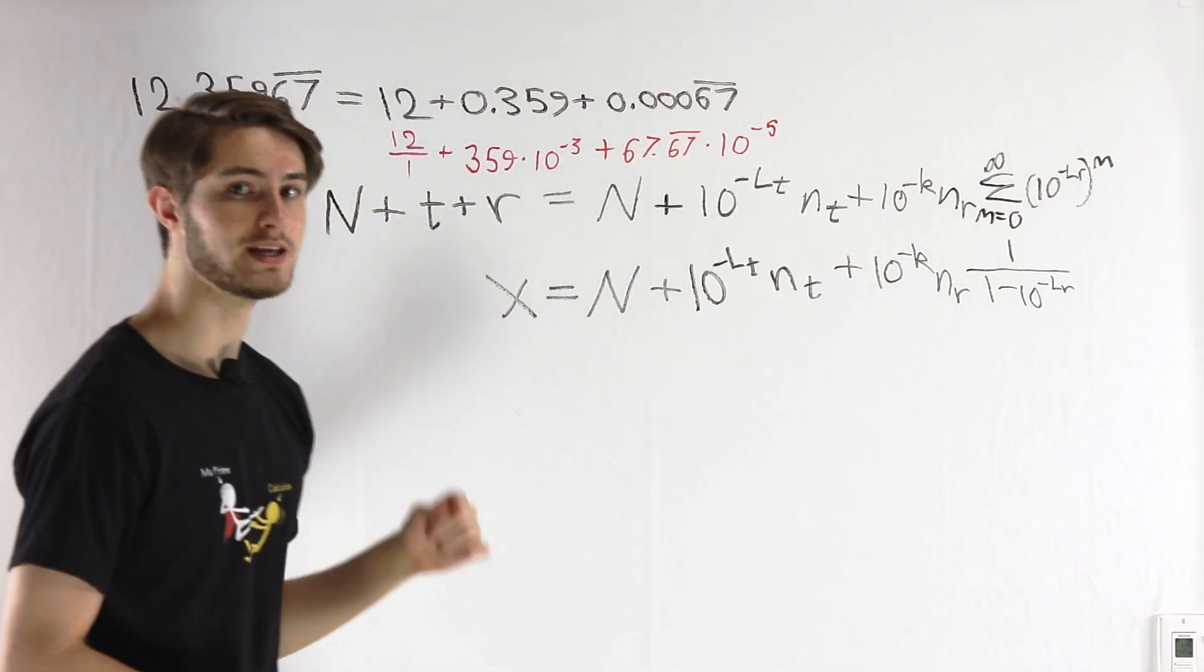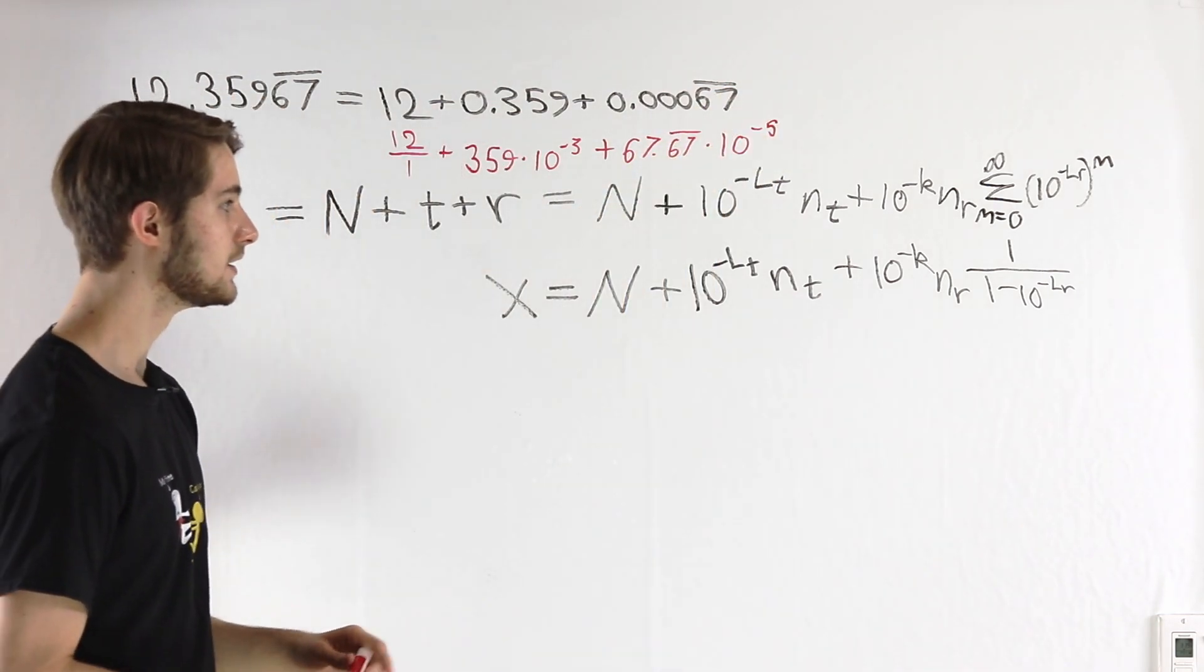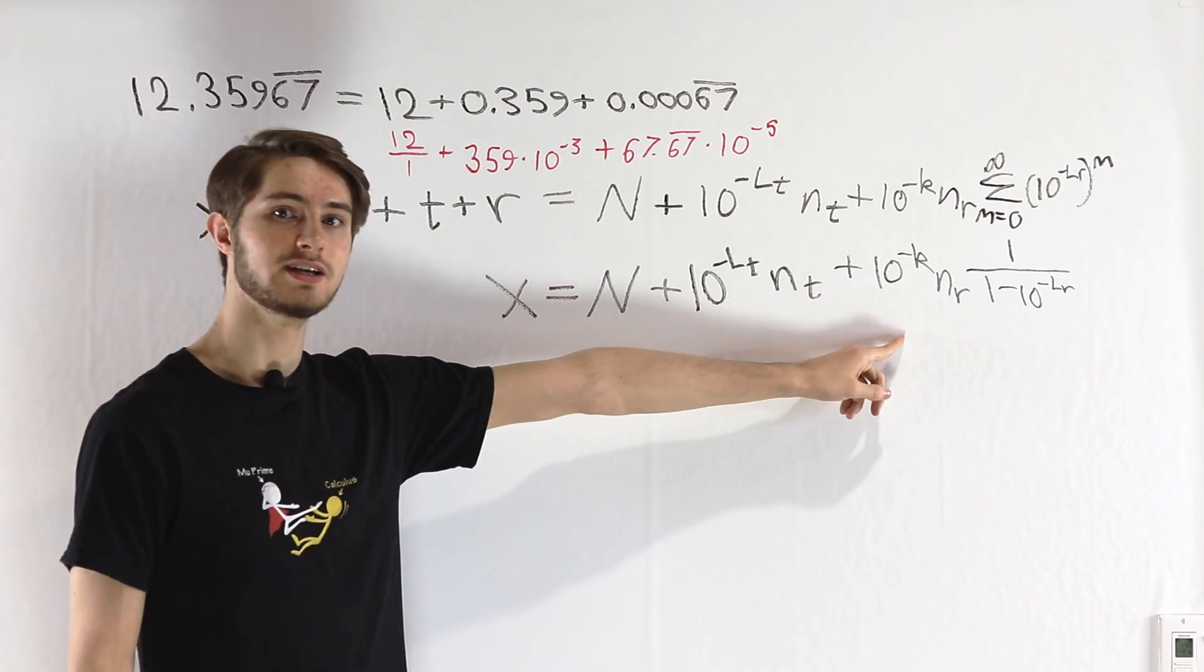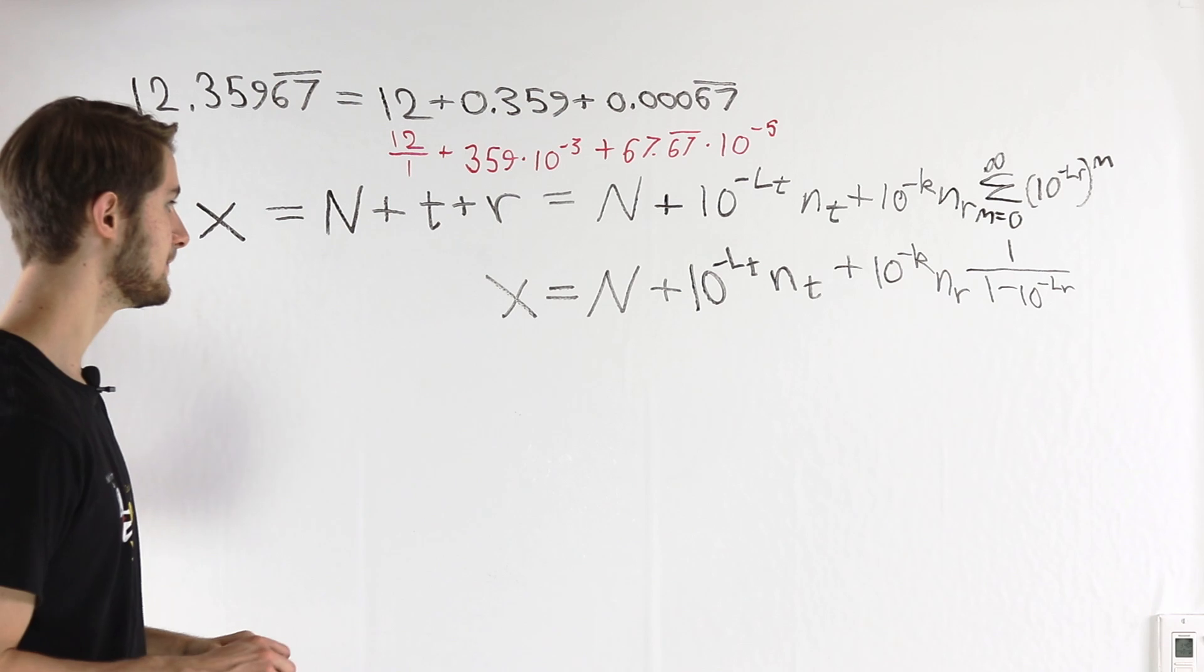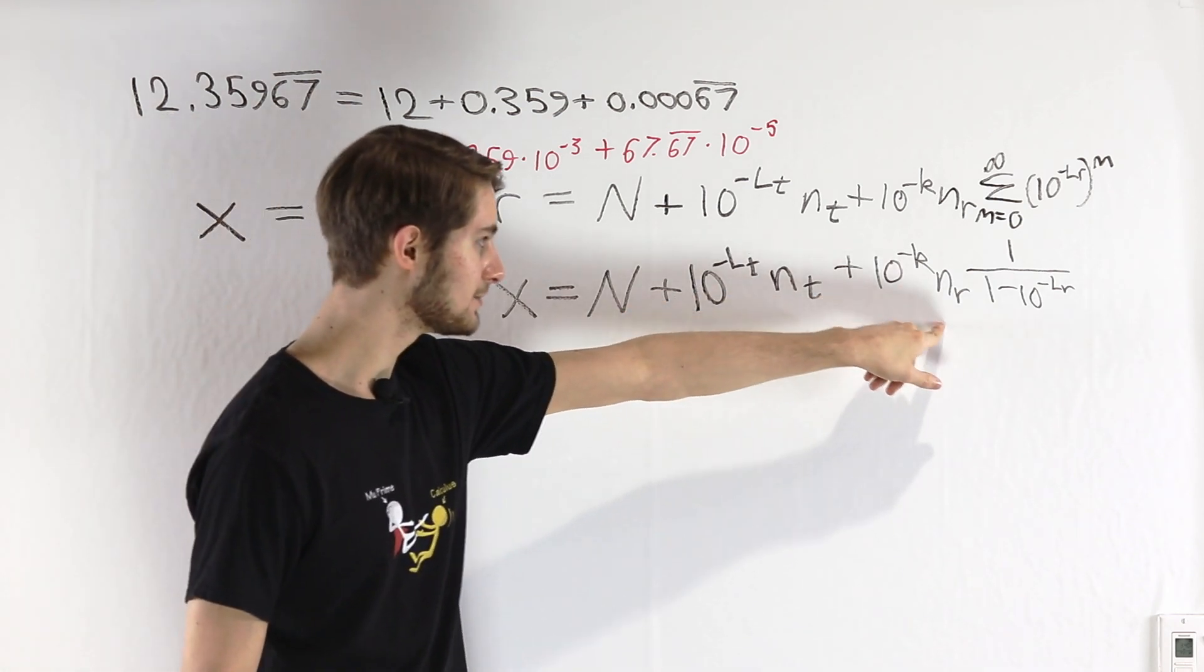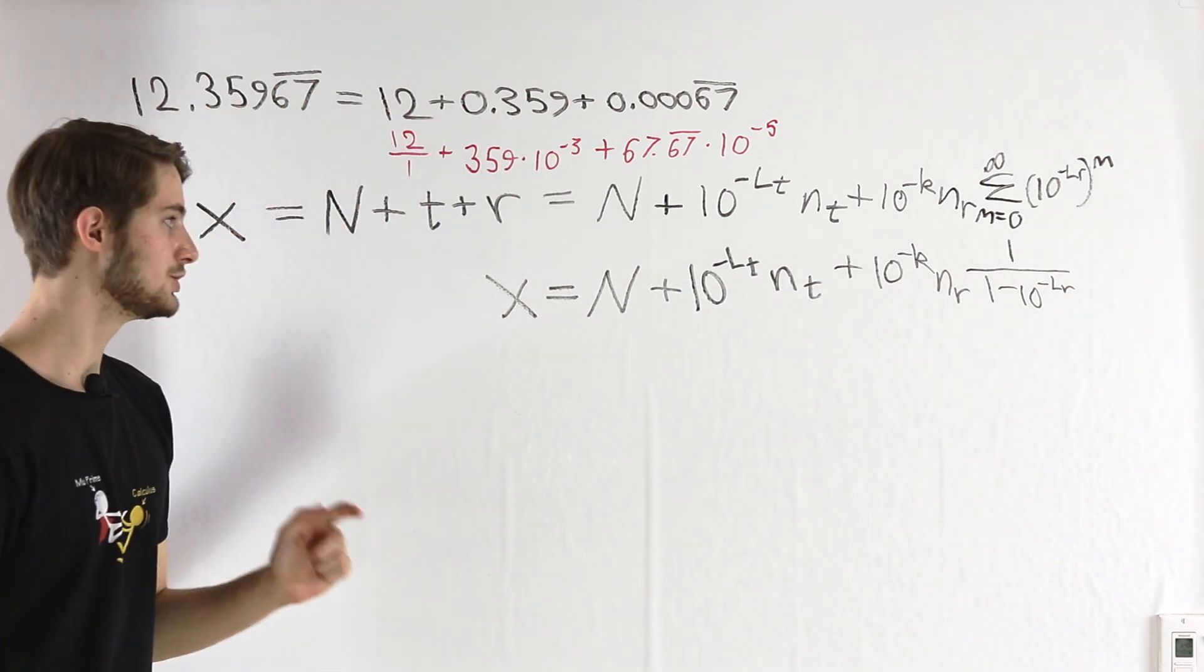Now the important thing to notice here is that every part of this expression is a rational number. N, l_t, n_t, k, n_r, and l_r, those are all integers.